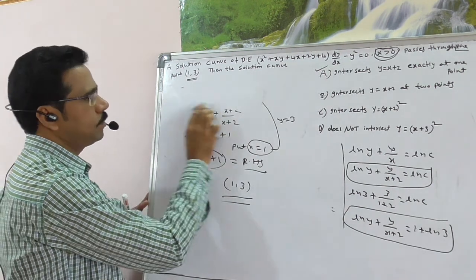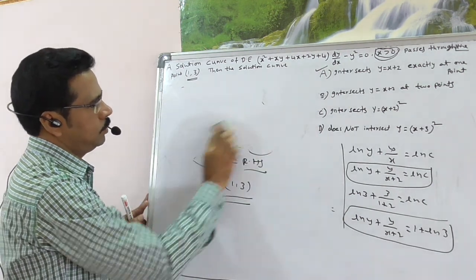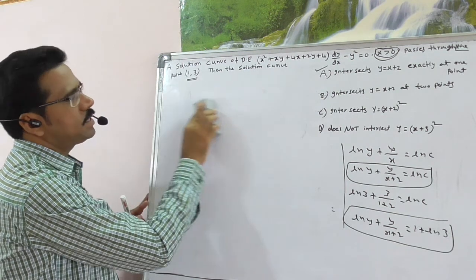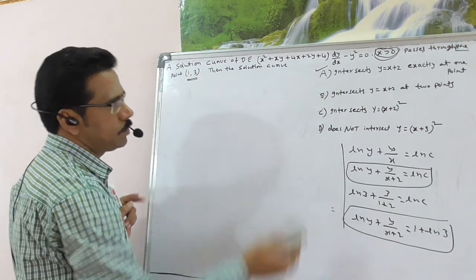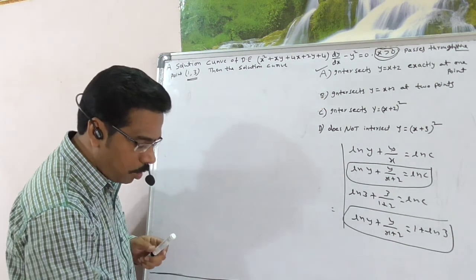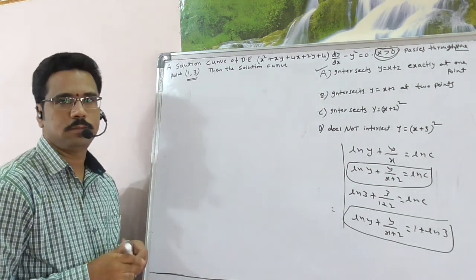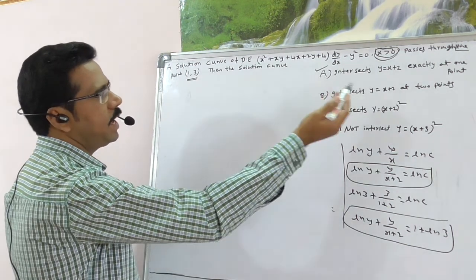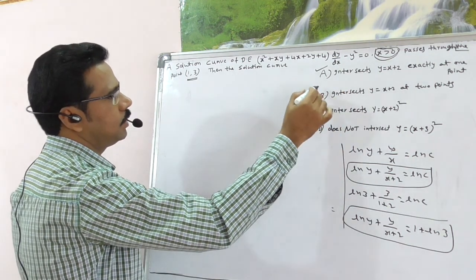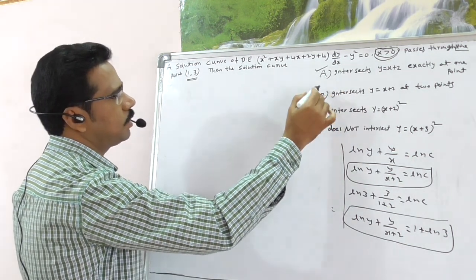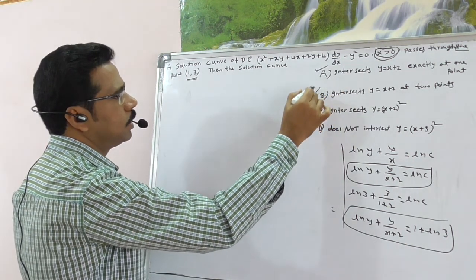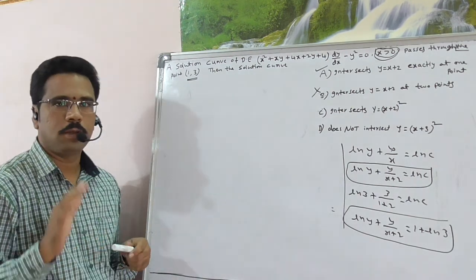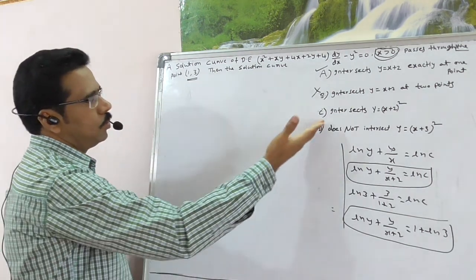Option B claims the curve intersects y = x+2 at two points, which is not possible since we already found it intersects at exactly one point (1,3) in Option A. So Option B is incorrect.